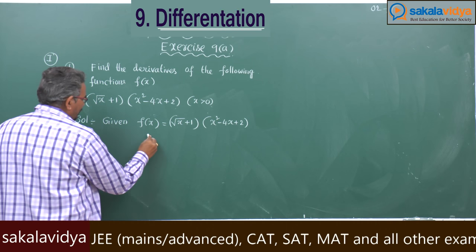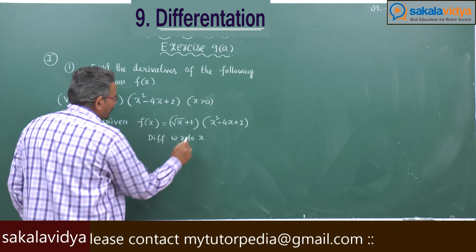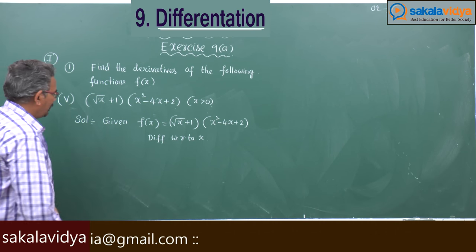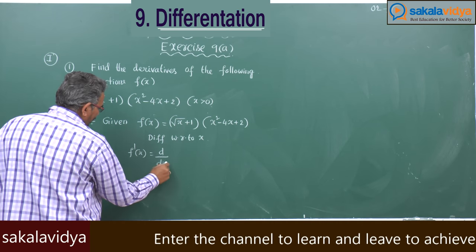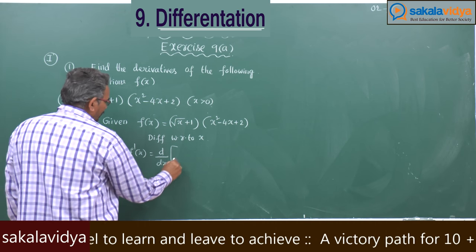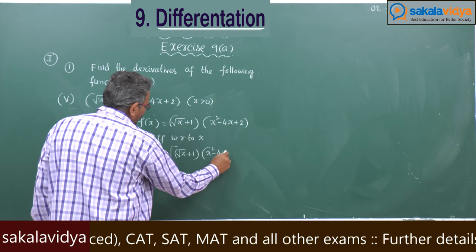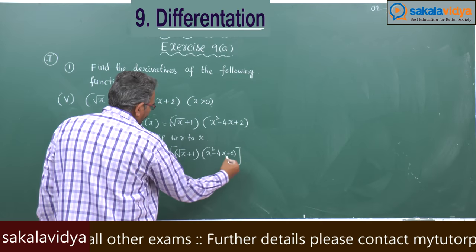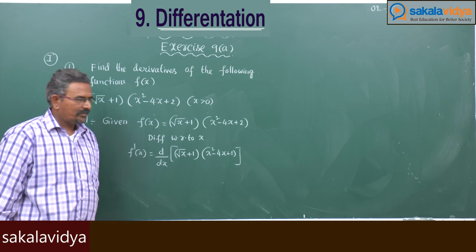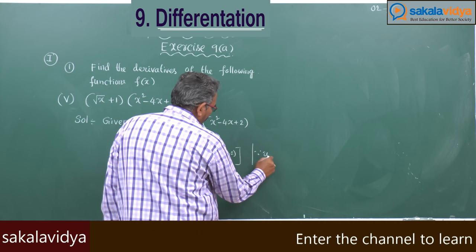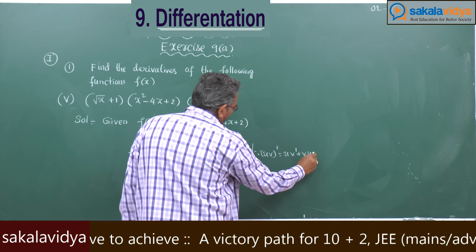Let us differentiate with respect to x. f'(x) = d/dx of √(x+1) · (x² - 4x + 2). This resembles the form u·v, so we apply the product rule: (uv)' = u·v' + v·u'.